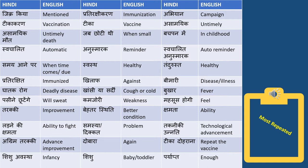'A samaik' means untimely. 'A samaik mauth' means untimely death. Kai baar dialogues mein aata hai ki because there is no immunization for the children, it results in untimely death. So 'a samaik mauth' — 'jab choti thi' means when she was small, and 'jab chota tha' means when he was small.